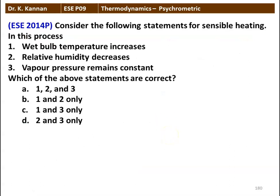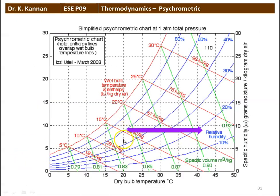Next question: consider the following statements for sensible heating. Statement 1: wet bulb temperature increases. Statement 2: relative humidity decreases. Statement 3: vapor pressure remains constant. The correct answer is 1 and 2 only. During the sensible heating process, relative humidity decreases from 60% to 20%, and wet bulb temperature increases — seen on the psychrometric chart along the red enthalpy line, from approximately 16 degrees to 23-24 degrees.